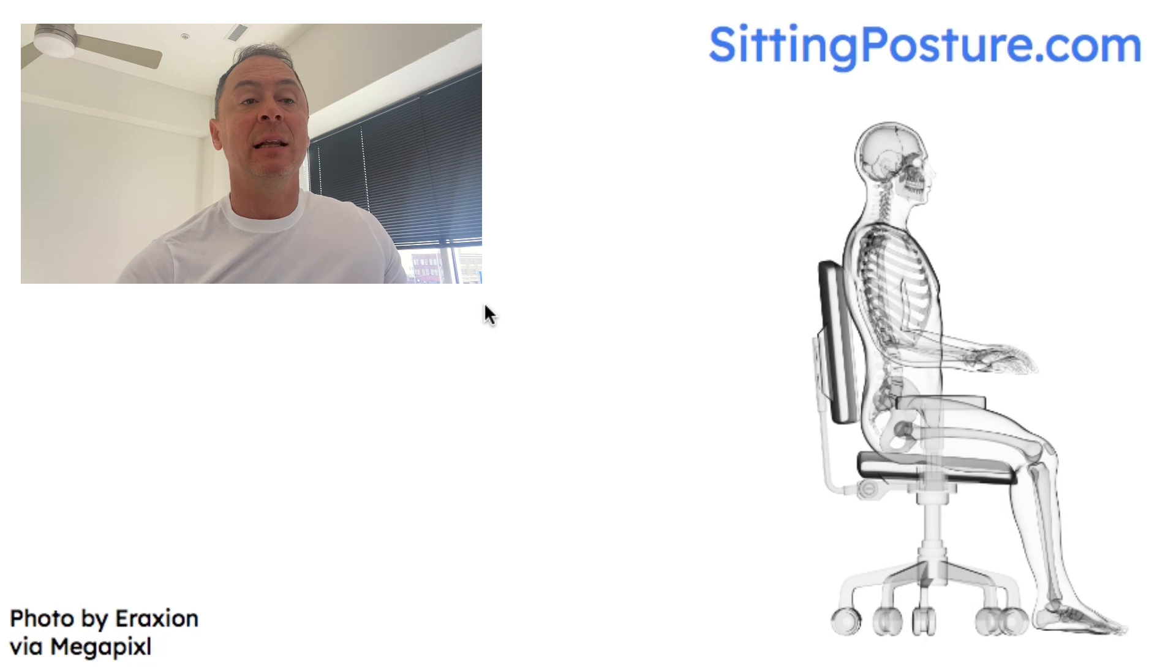So what we want to try to do is sit like this with the natural curves on our spine, a nice neutral balanced spine as much as possible. Not all the time because sitting or standing in the same exact position for long periods of time, even if it is with great posture, can cause repetitive strain and overuse injuries. So we also want to try to avoid that.